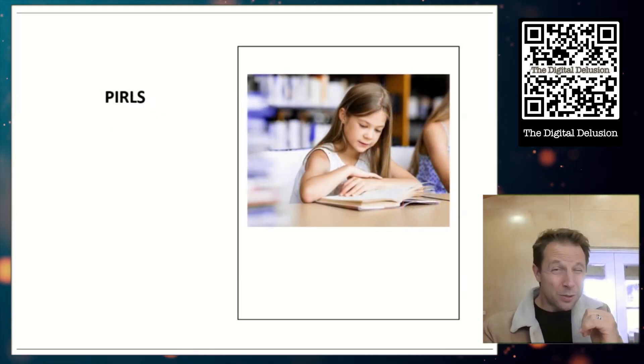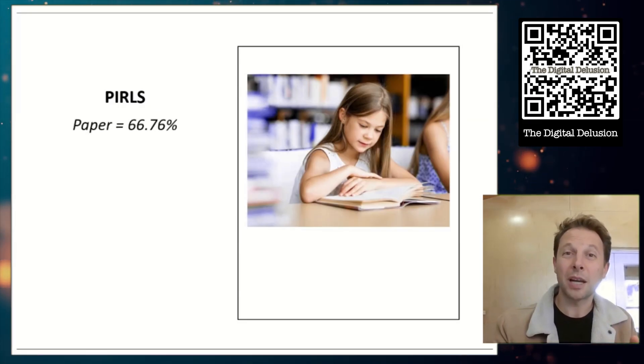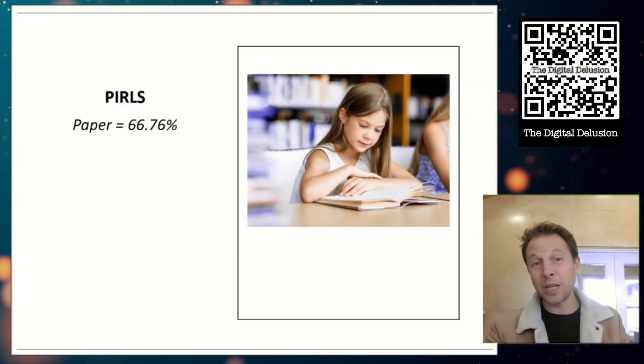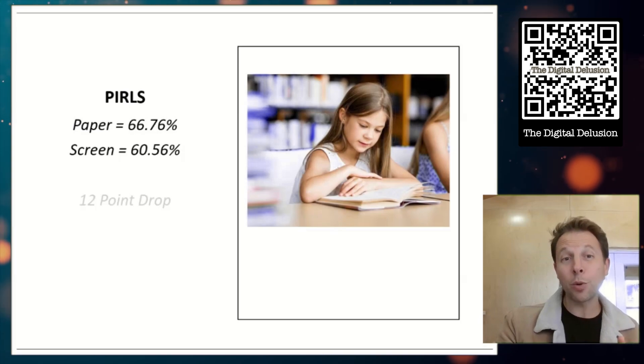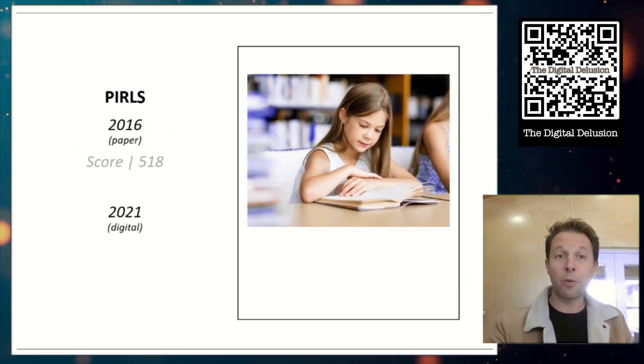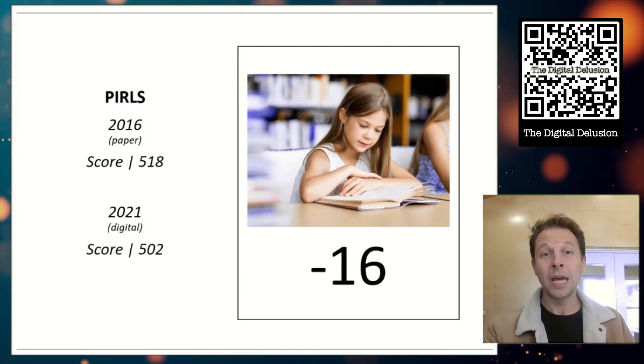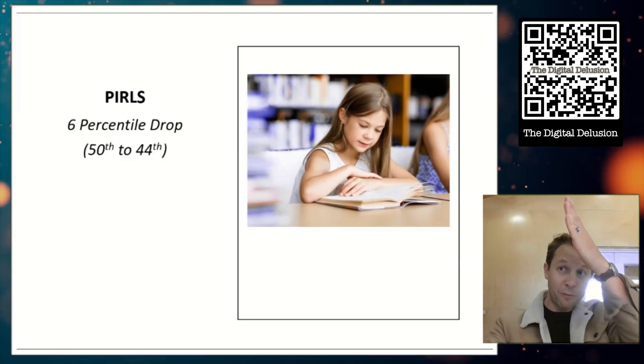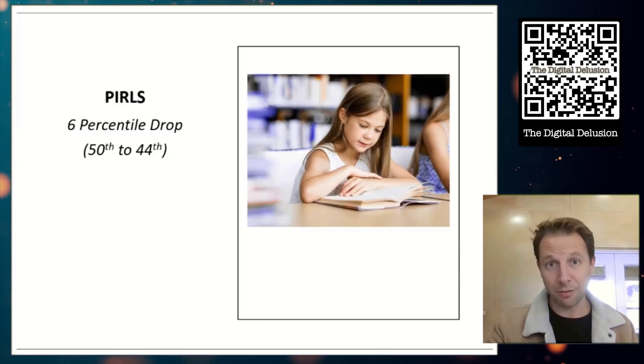And let's go to Pearls, the reading exam. Kids who took a paper exam answered about 66.7% of questions correct. But kids who took the exact same exam on a screen only answered about 60.5%. Now, when you do your math, you figure out that's equivalent to about a 12 point drop. So going back to our scores, the last time we were paper, 518. When we moved digital, 502. That's a 16 point drop. And when it comes to Pearls, that's the equivalent of a six percentile drop. So from the 50th to the 44th percentile, simply by changing the medium you are taking your test on.